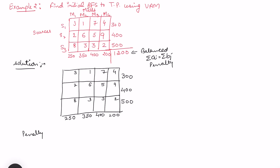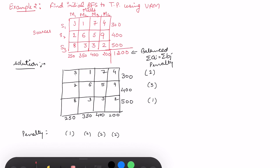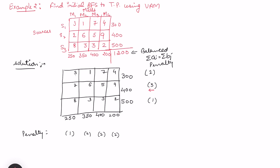We calculate penalties for rows and columns. In the first row, the least cost is 1 and the next least is 3, so the penalty is 2. In the next row, the least is 2 and the next least is 5, so the difference is 3. In the third row, the least is 2 and next least is 3, so the difference is 1. For the columns: column 1 has penalty 1 (difference of 2 and 3), column 2 has penalty 2 (1 and 3), column 3 has penalty 2 (3 and 5), and column 4 has penalty 2 (2 and 4). The highest penalty corresponds to row 2 with a penalty of 3.